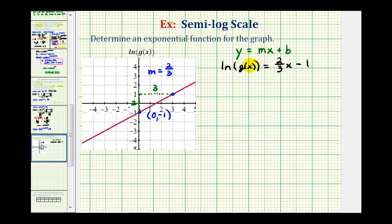Now we're going to write this log equation as an exponential equation. Since we have natural log, this is log base e, so e is the base. The quantity (2/3)x - 1 would be the exponent, and the number would be g(x).